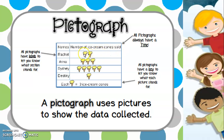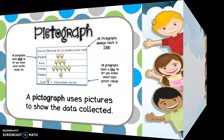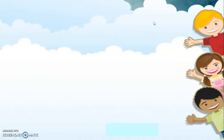Why does it become six ice cream cones when we see only two? Because each picture stands for three ice cream cones. Let us have an example so we can understand more.